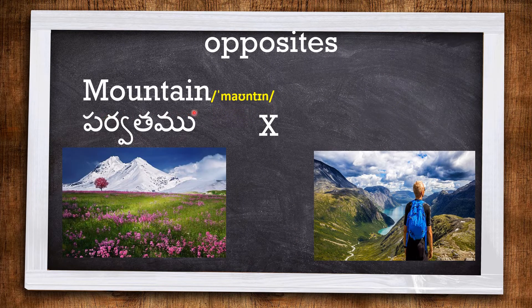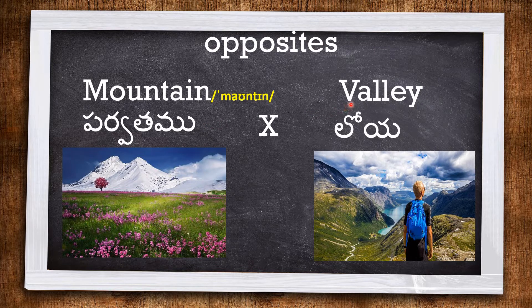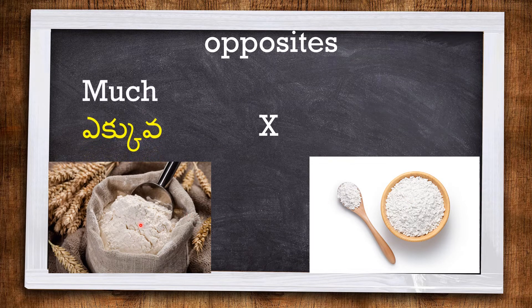MOUNTAIN — the opposite of mountain is VALLEY. A valley is a low area between mountains.